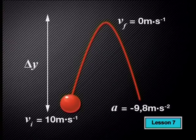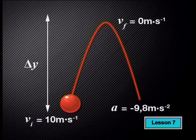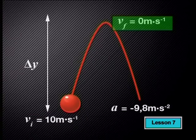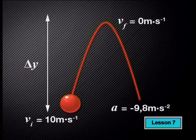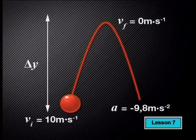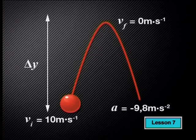The initial velocity of the ball is 10 meters per second upward. The final velocity of the ball at the top of its motion is 0 meters per second. The acceleration due to gravity is 9.8 meters per second squared. The first question asks us to determine the maximum height, which is the delta y value.